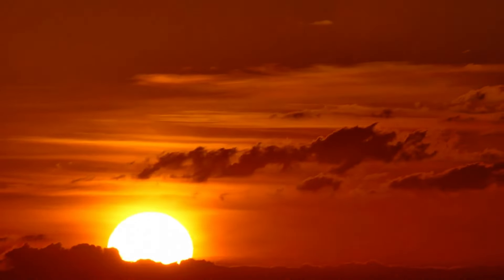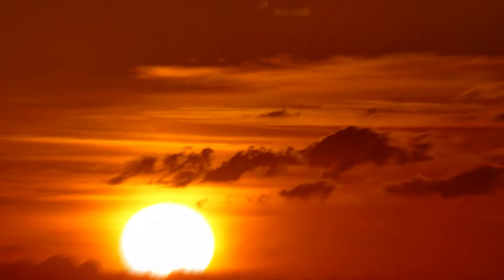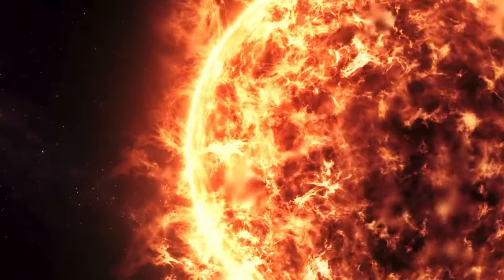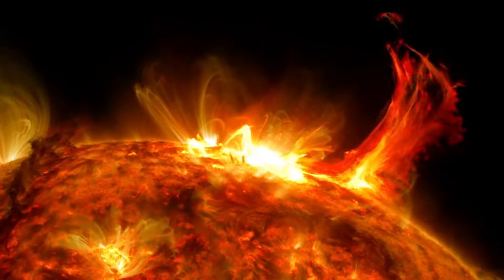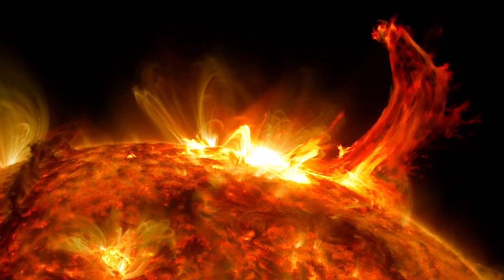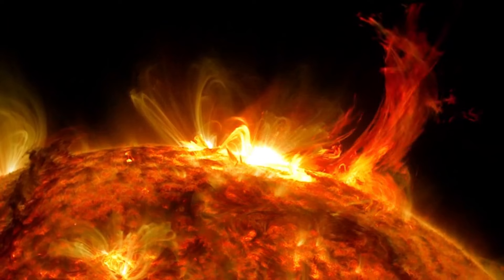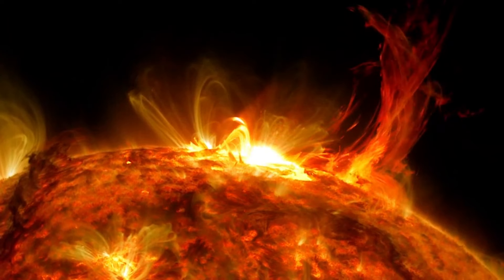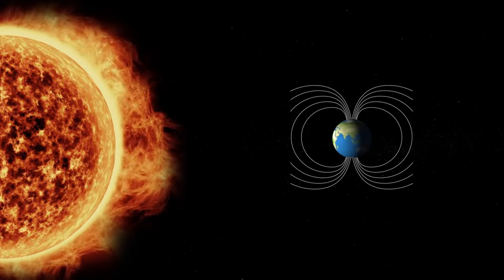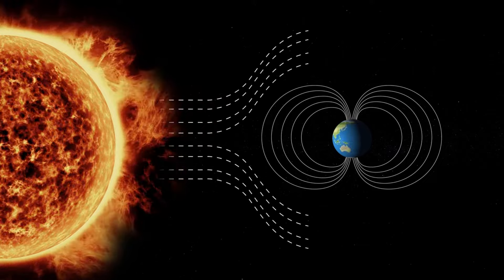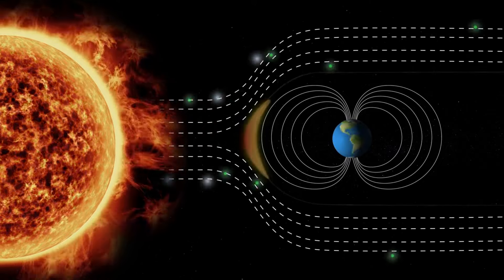Our story begins at the sun. The sun continuously emits a stream of charged particles called the solar wind. During periods of high solar activity, like solar flares and coronal mass ejections, these particles are sent hurtling toward Earth in greater quantities. When these solar wind particles reach Earth, they are guided by our planet's magnetic field towards the poles.